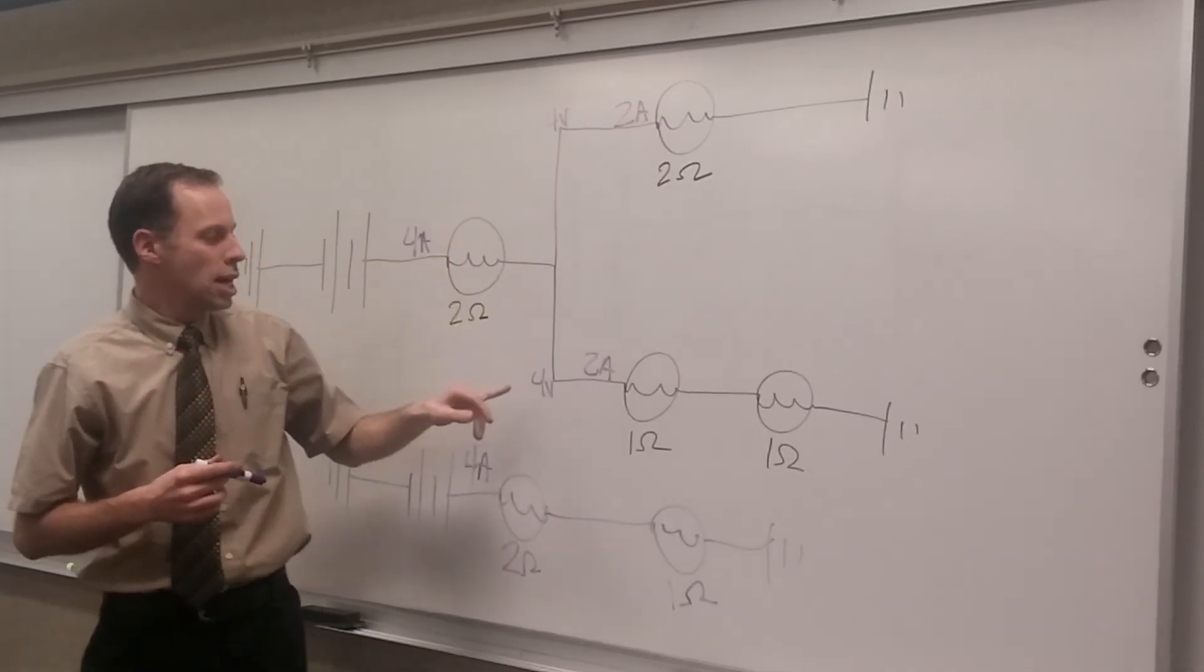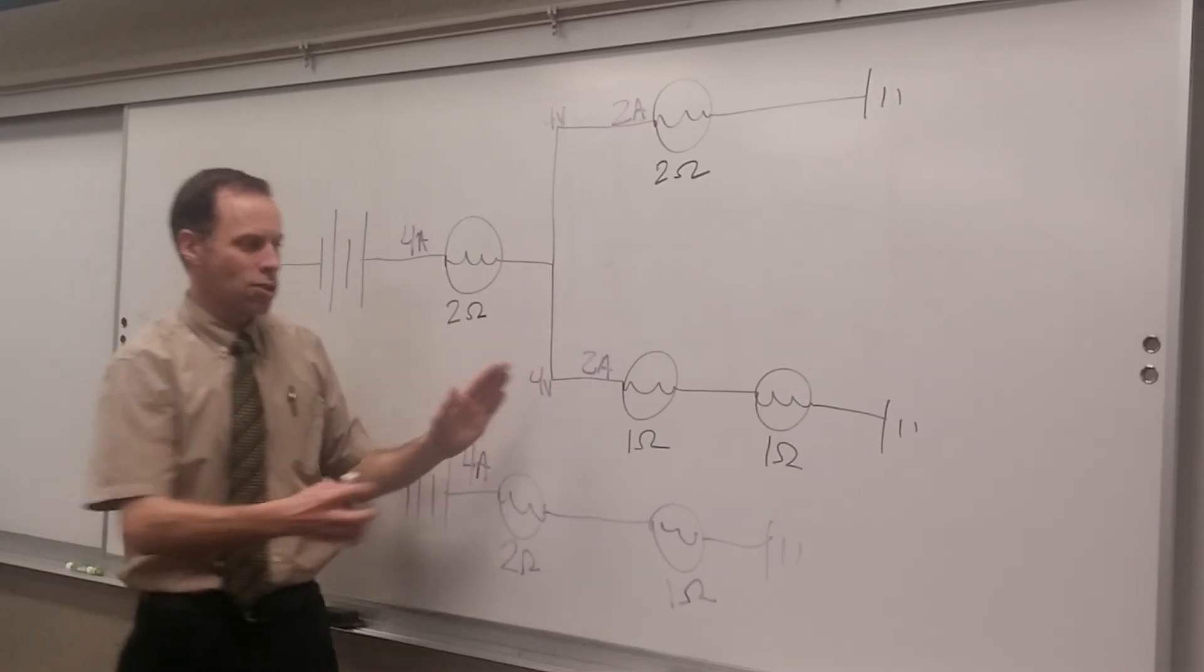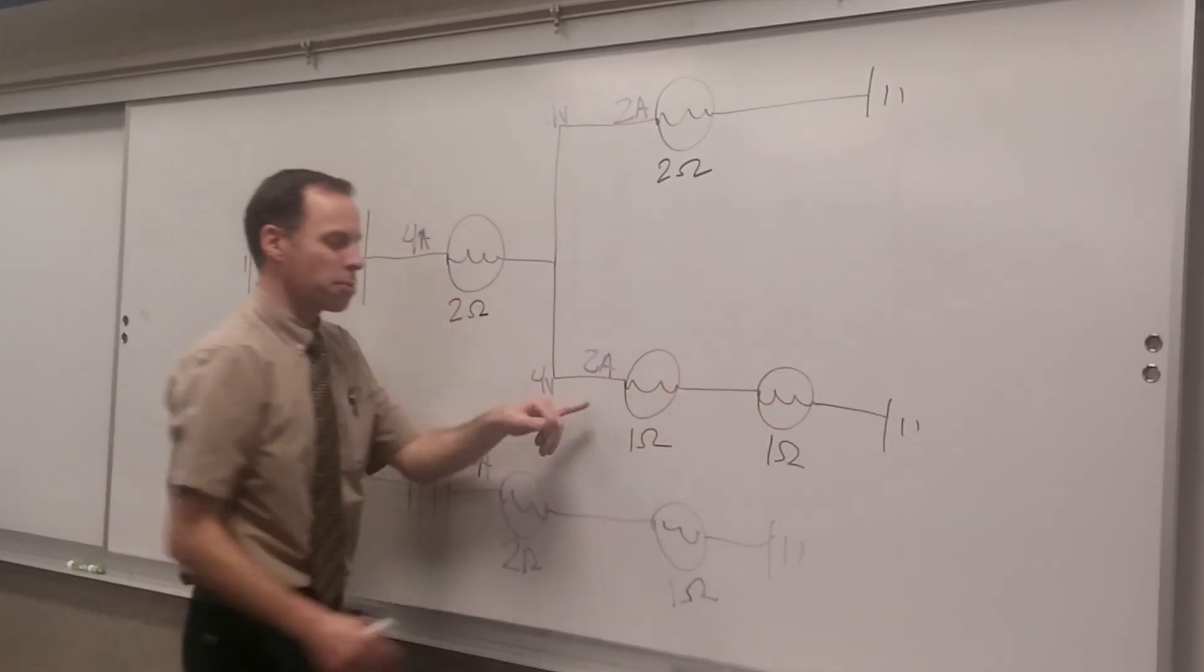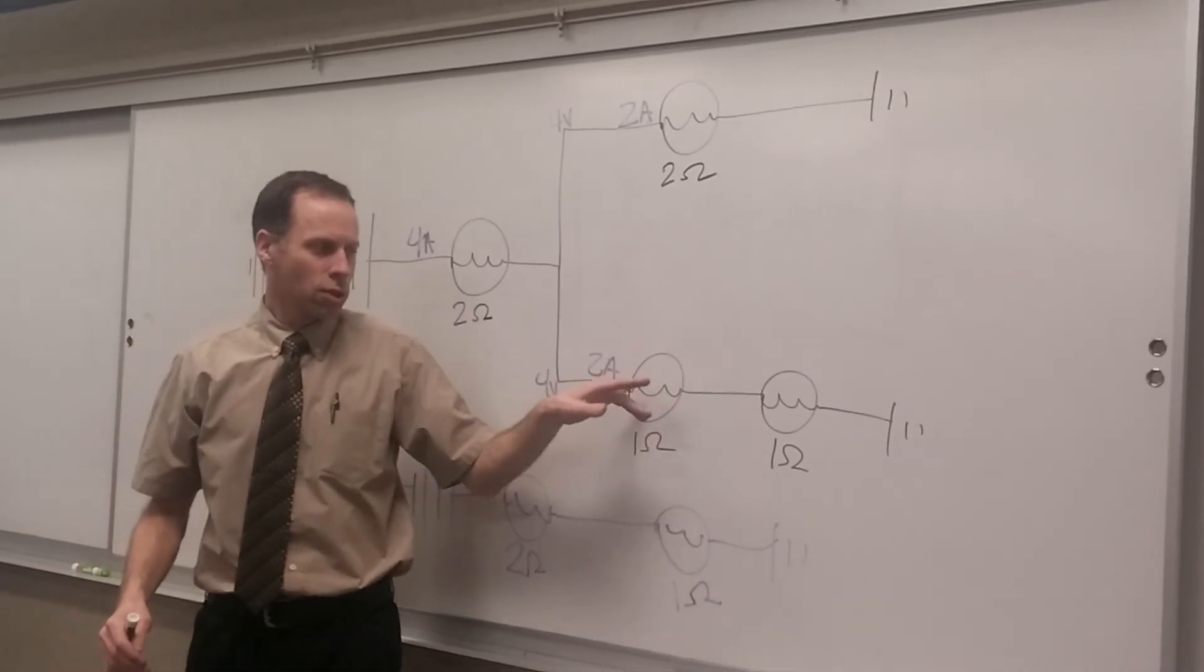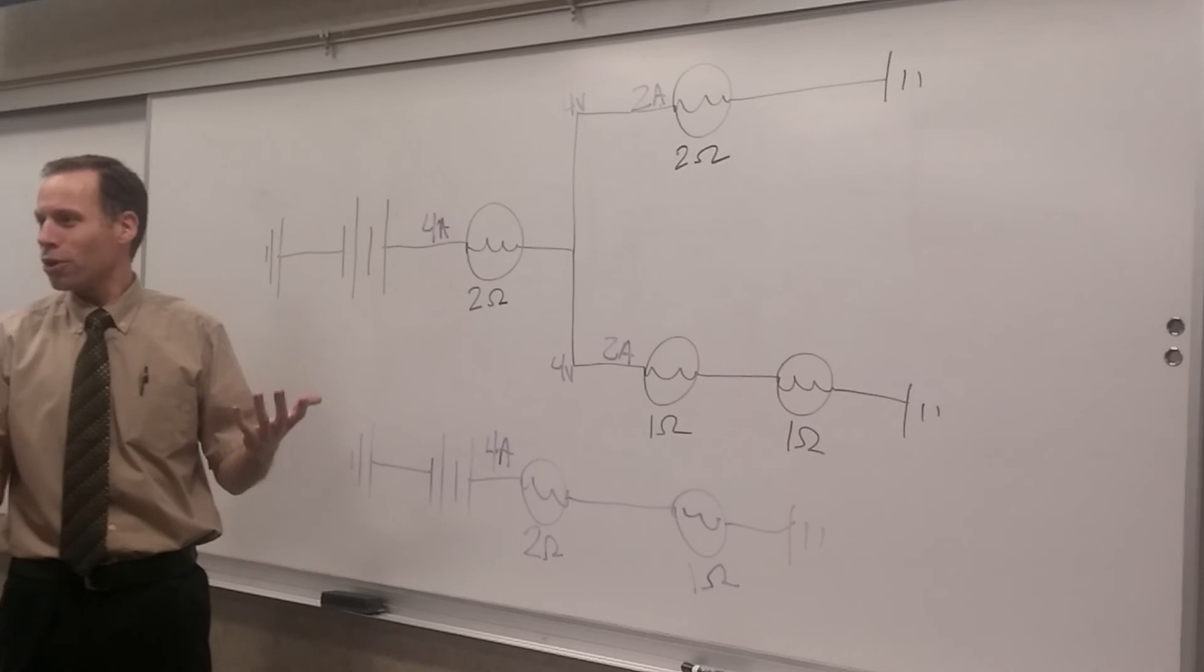How much voltage is dropped across this whole leg? Four volts. But how much across each of these? Two. Two times one and two times one, so two volts here and two volts here add up to four.